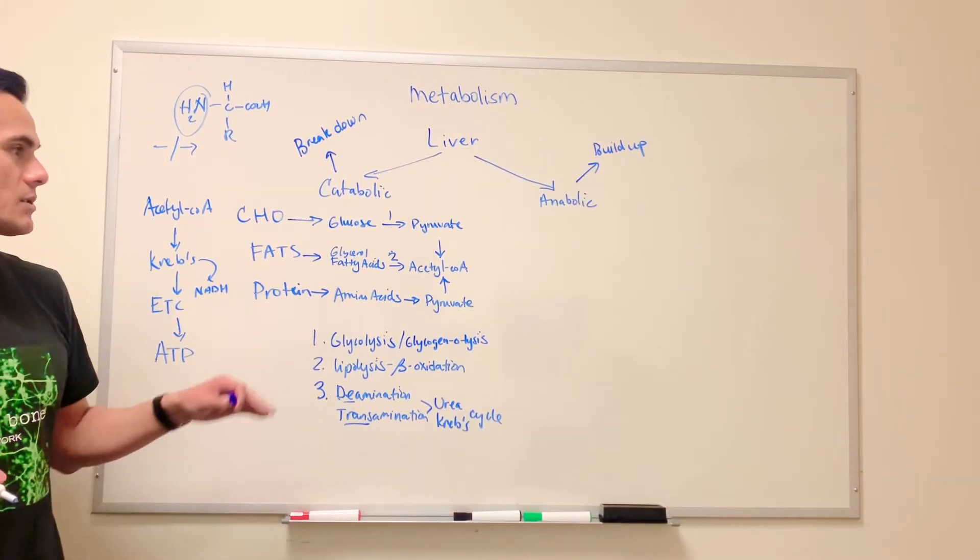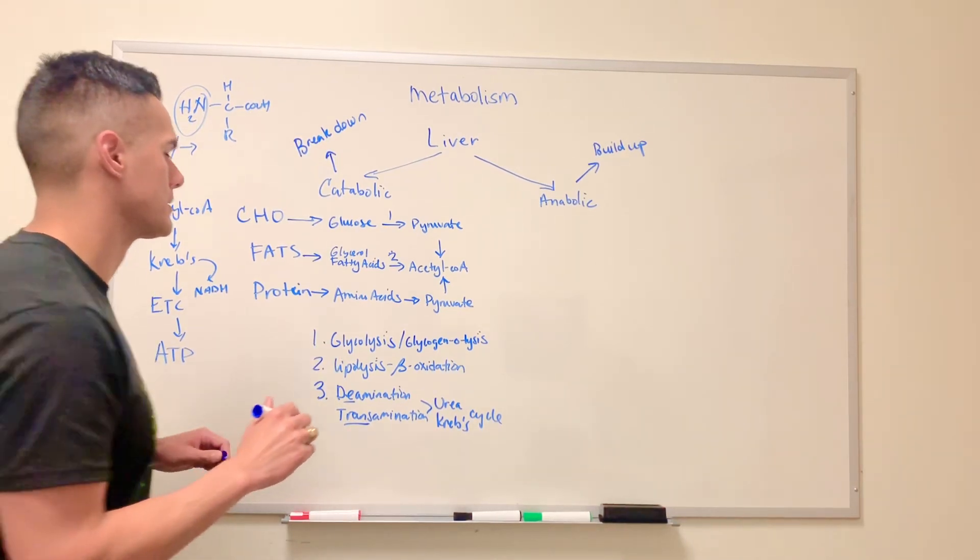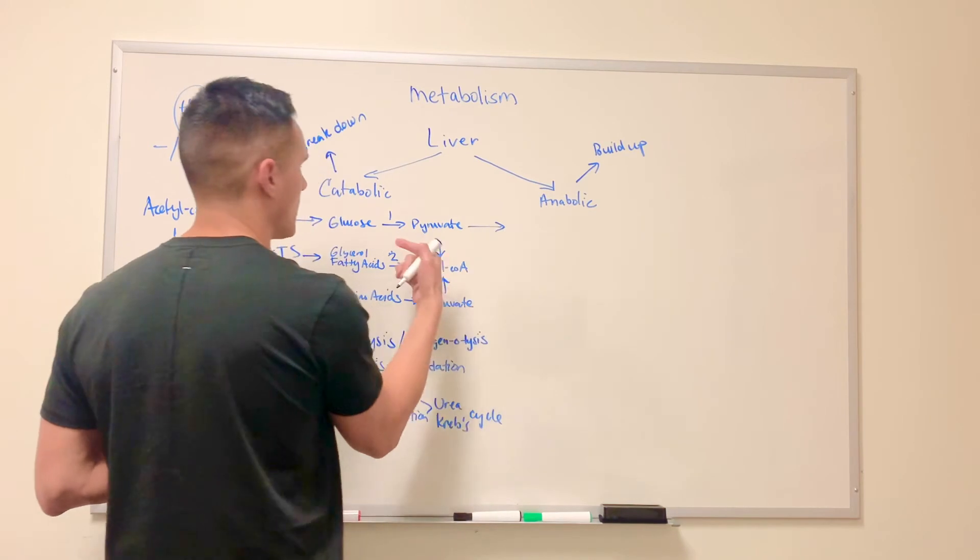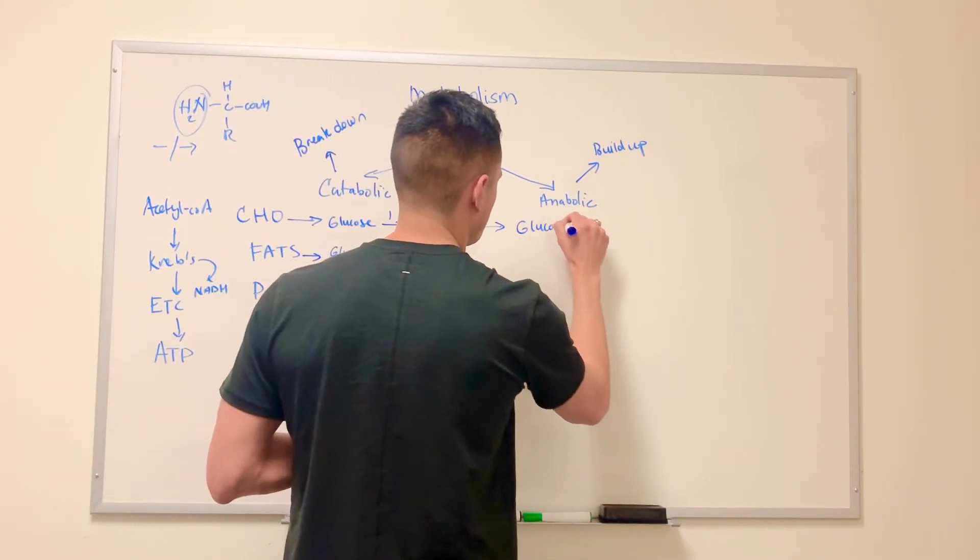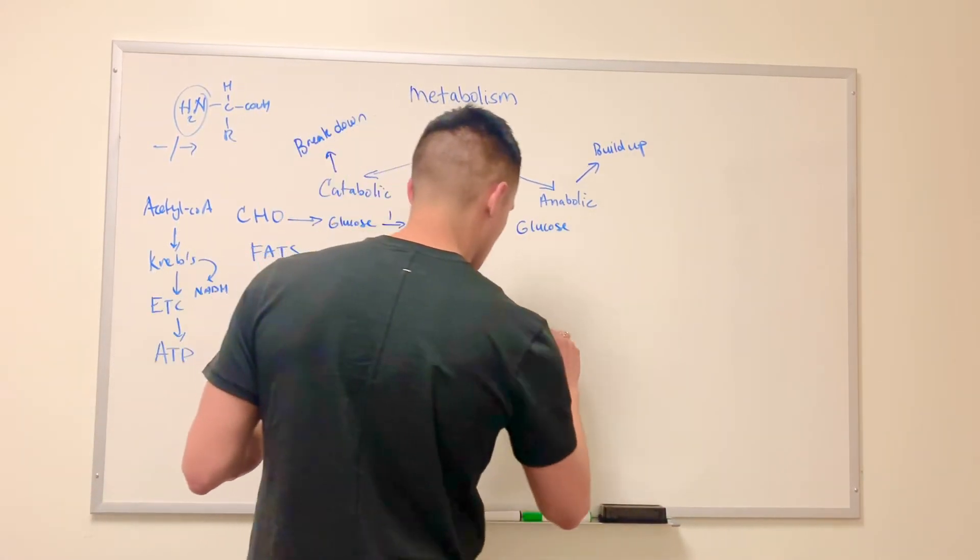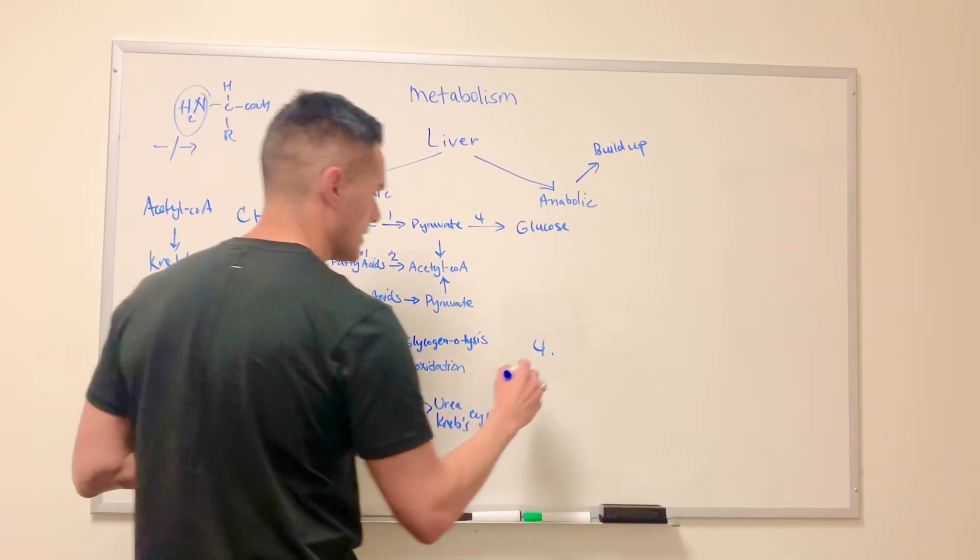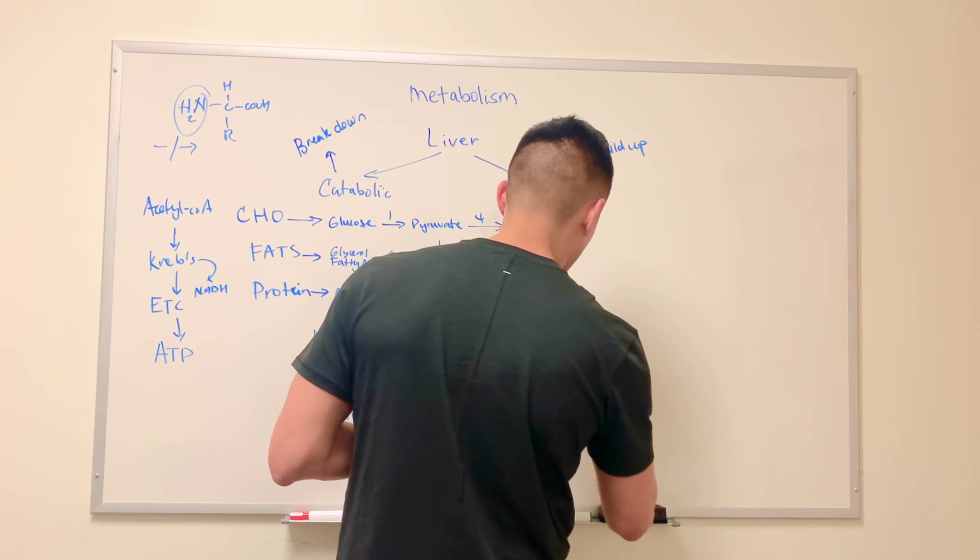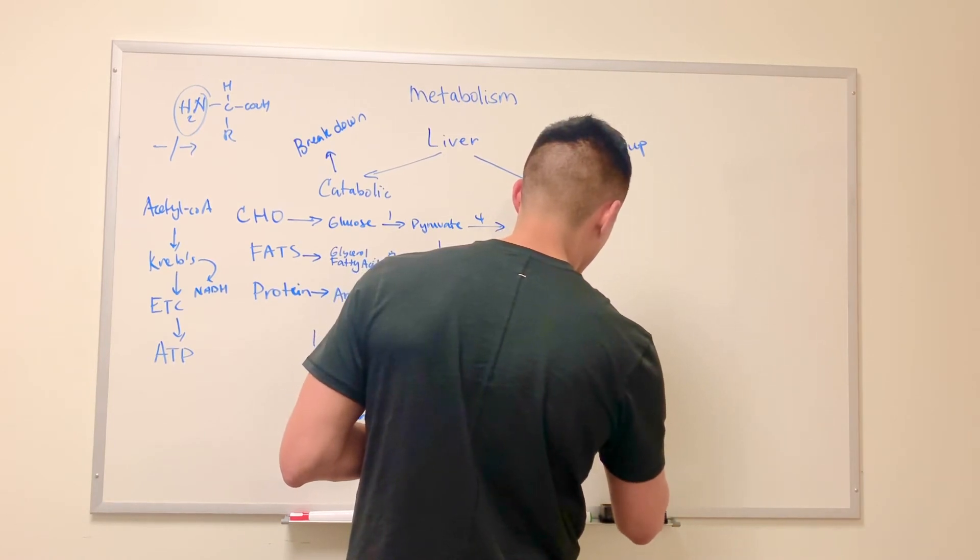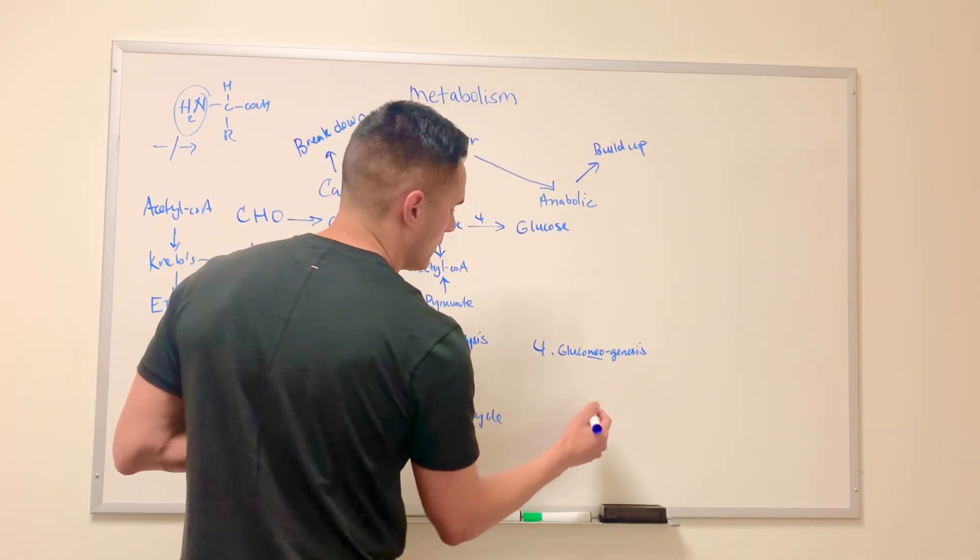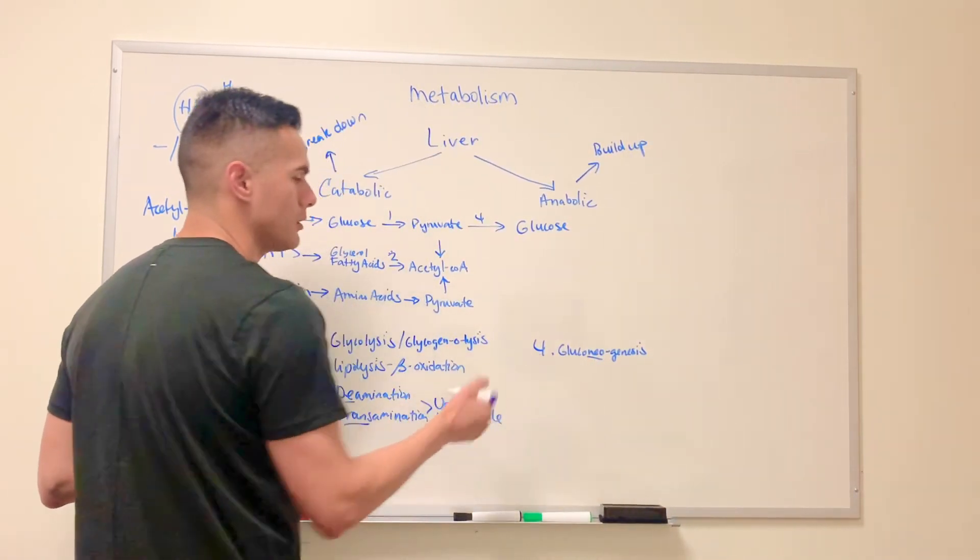So these are the catabolic reactions. What about some of the anabolic reactions? Well, we can also use pyruvate to reverse this process and form glucose. This process is known as gluconeogenesis because we're forming new glucose.